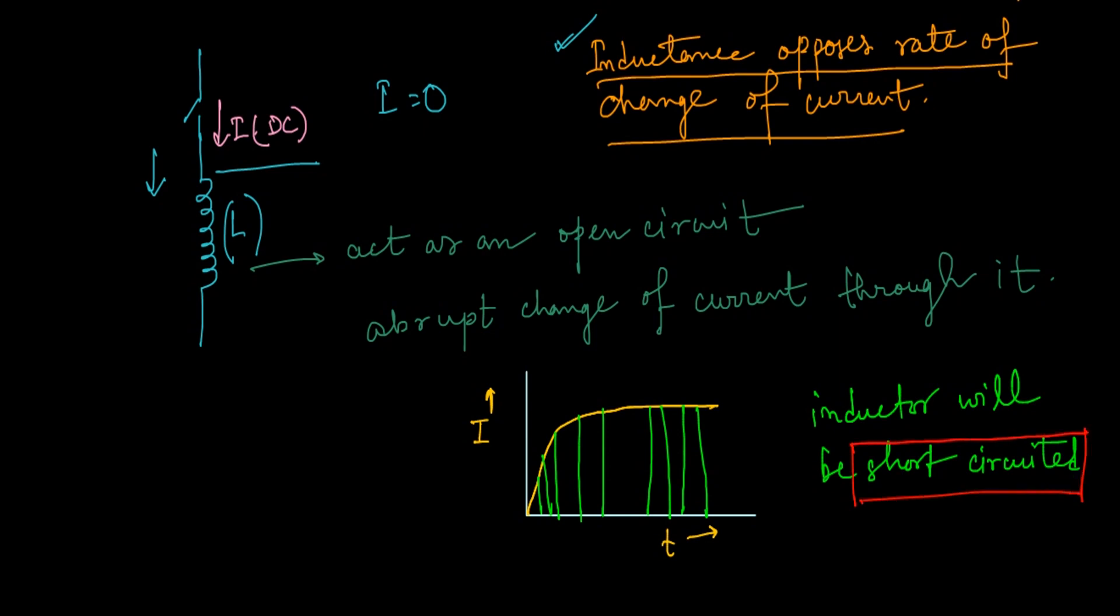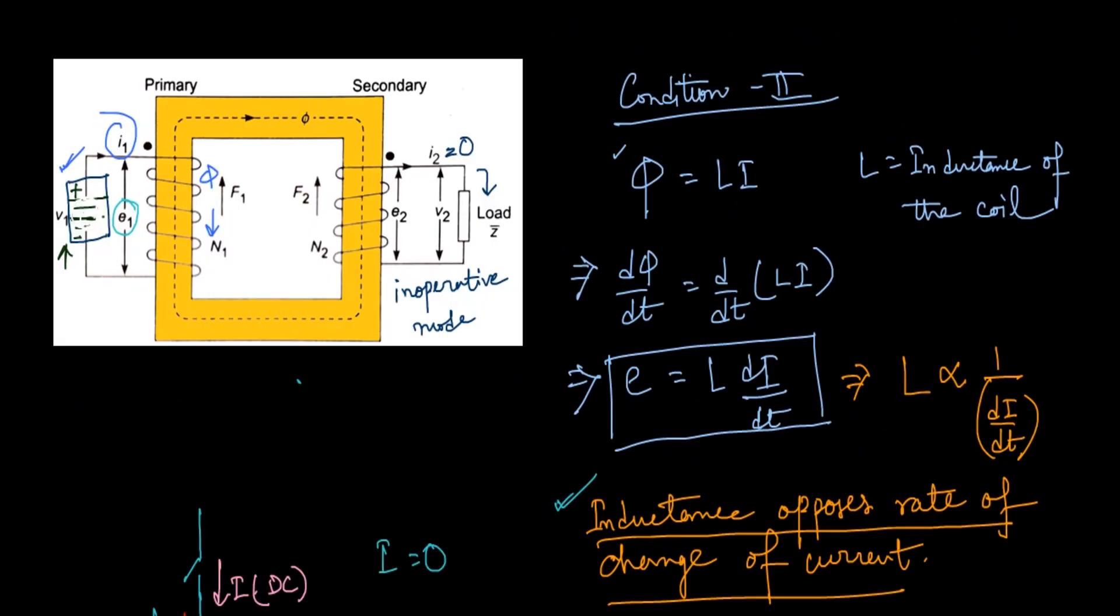This is a very important thing to be noticed. Whenever there is a short circuit or a high value of current flowing through this inductor, there is much chance that the entire coil may burn out. So if we apply a DC current to a transformer, there is all probability that your coil winding may burn out.